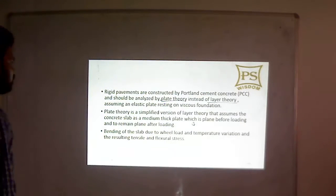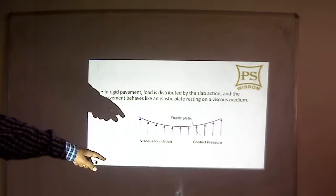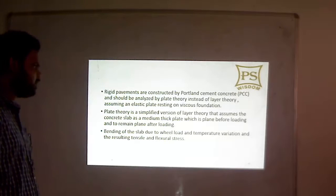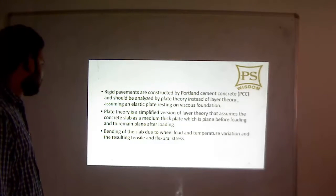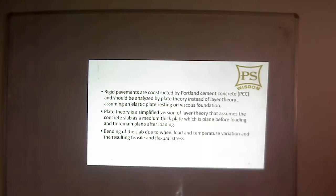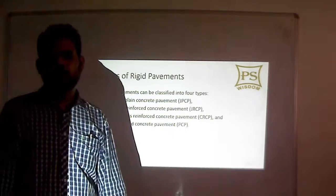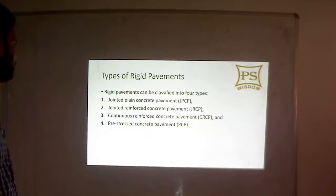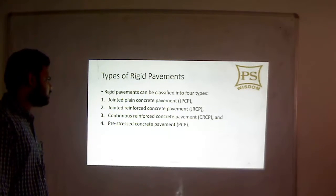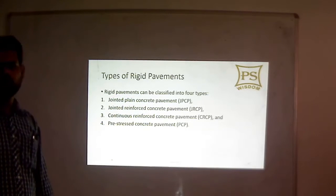Plate theory assumes an elastic plate resting on a viscous foundation and is a simplified version of layer theory. It assumes the concrete slab as a medium-thick plate that is plain before loading and remains plain after loading. Bending of the slab due to wheel load and temperature variation results in tensile and flexure stresses. Just like flexible pavements have several types, rigid pavements also have several types: JPCP (Jointed Plain Concrete Pavement), JRCP (Jointed Reinforced Concrete Pavement), CRCP (Continuous Reinforced Concrete Pavement), and PCP (Pre-stressed Concrete Pavement).